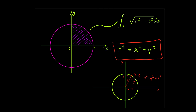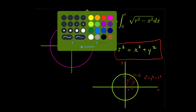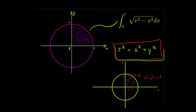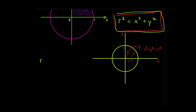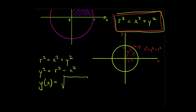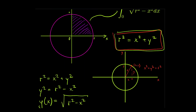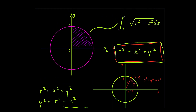Now, how do we get this integral? We just re-express the equation in terms of y. We have r squared equals x squared plus y squared, which means y squared equals r squared minus x squared, and therefore y as a function of x is the square root of r squared minus x squared. This is where the integral of the square root of r squared minus x squared comes from.